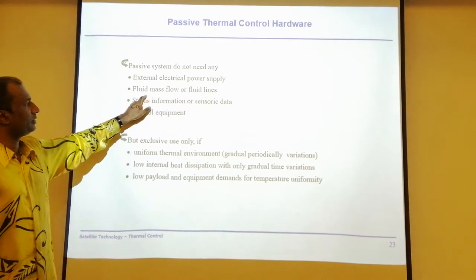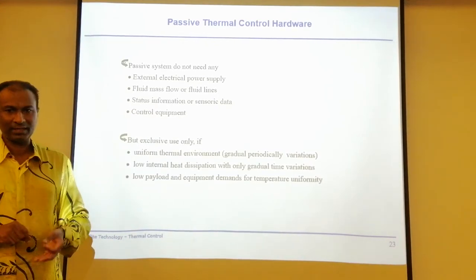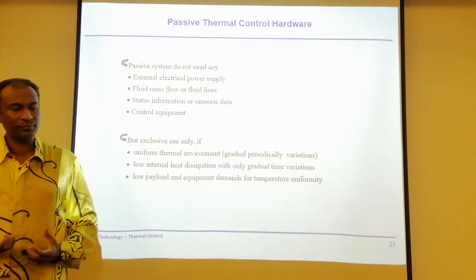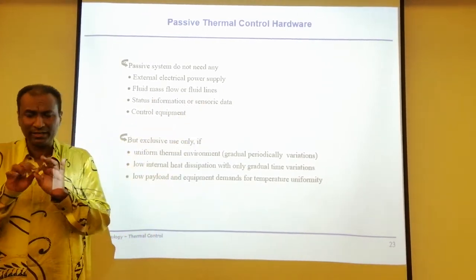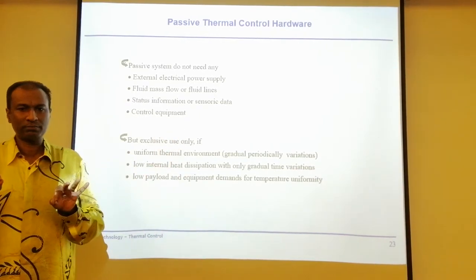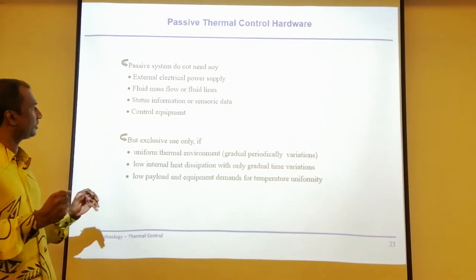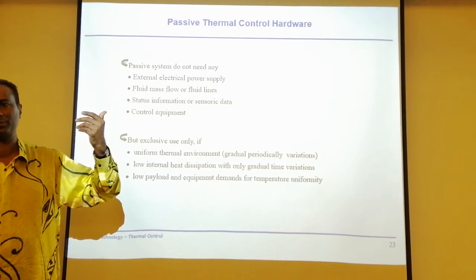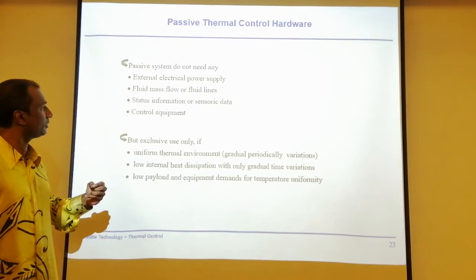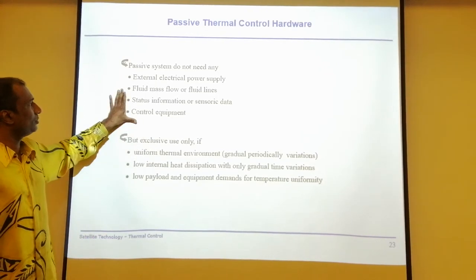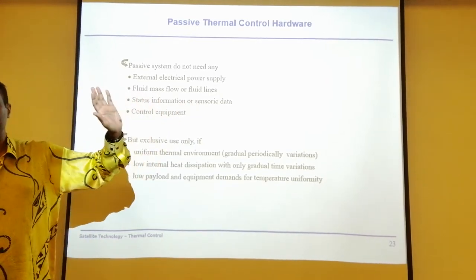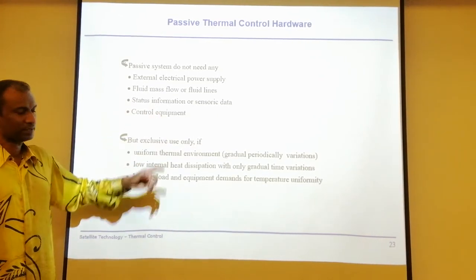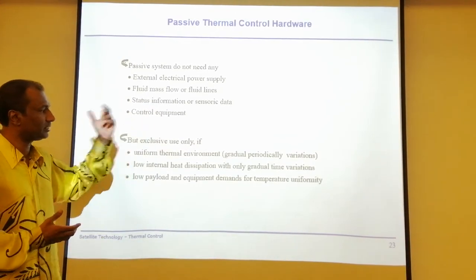Fluid flow or line mass flow — fluid is actually flowing, and in line mass flow there is a reservoir from which fluid flows. You have fluid lines like heat pipes, thin loops to reject the heat. With a passive system, you don't need a control system, you don't need electricity, and you don't need thermometers constantly monitoring temperature because it happens naturally.